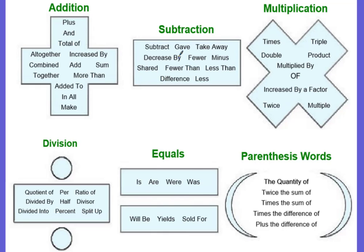Multiplication: if you time something, if you double or triple it, the product of - of is one that kind of escapes you. Of means to multiply. Increased by a factor, twice, or multiply are all words that mean multiplication. An additional word that means multiplication would be area, so you can add that to your list.